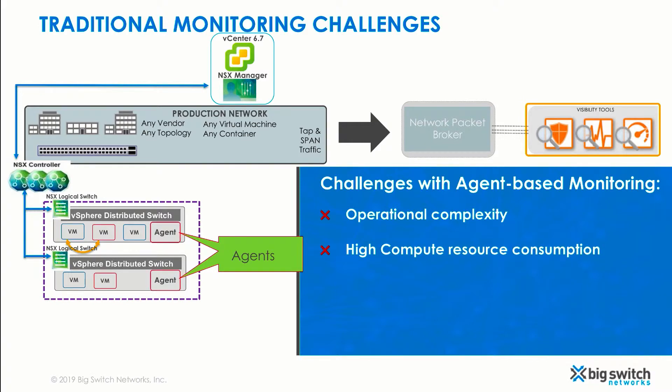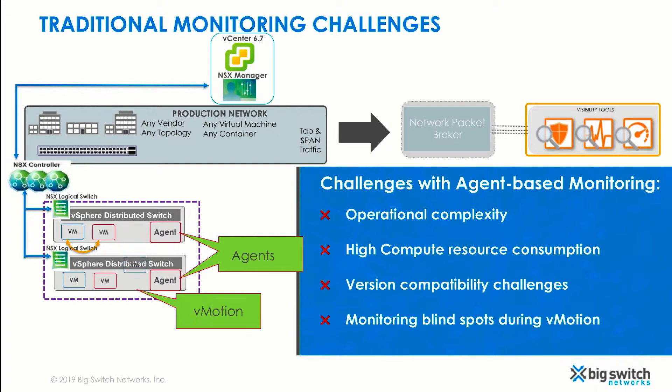Deploying an agent on the ESXi host consumes compute resources, in which case one has to plan and allocate various resources for the agent such as CPU, memory, and storage. Another challenge with the agent-based approach is that the agent has to be version compatible with VMware deployments. Also, what happens when a VM migrates to another host where an agent is not installed?